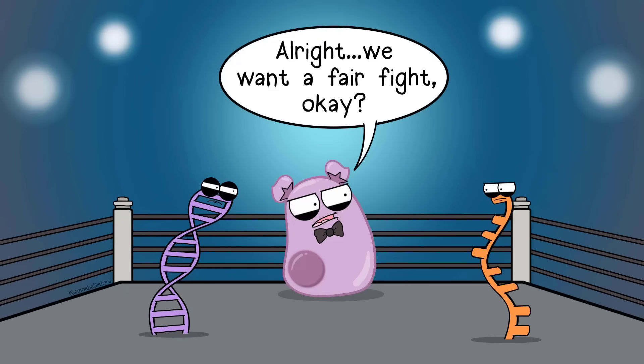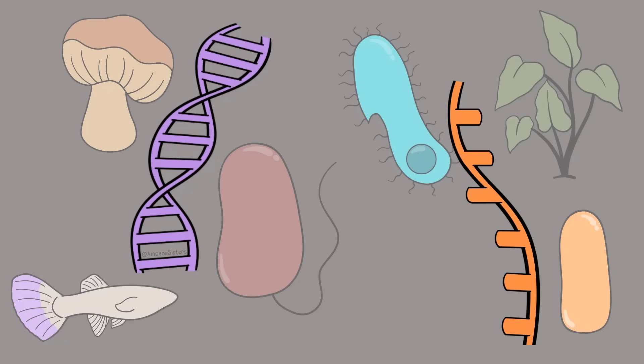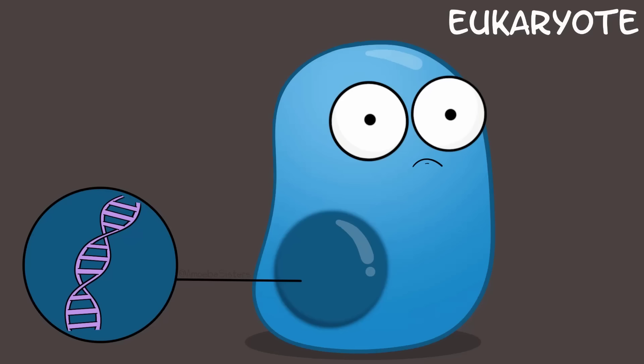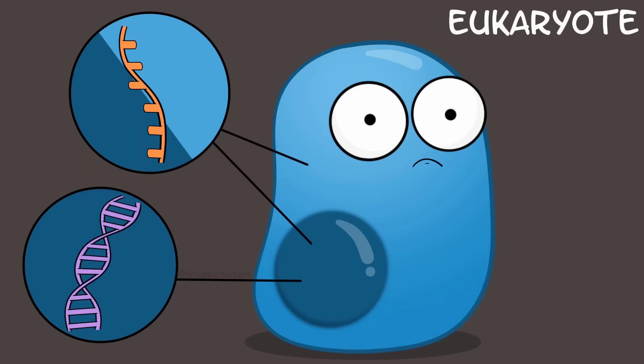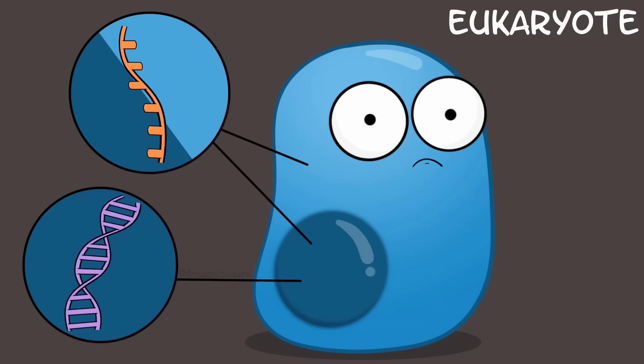So let's compare and contrast DNA with RNA. First, you will find DNA and RNA in all living organisms. In eukaryotic cells, DNA tends to be found in the nucleus, while you can find RNA both inside and outside of the nucleus. Prokaryotic cells don't have a nucleus.